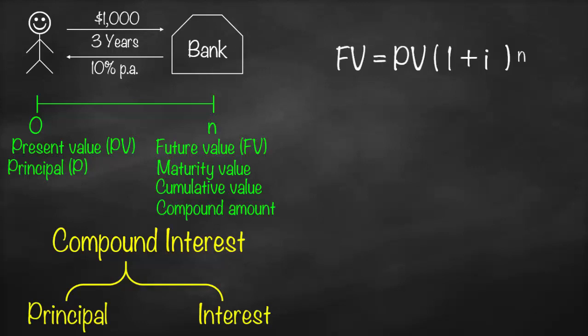Therefore, the future value formula of compound interest is equivalent to present value multiplied by 1 plus interest to the power n. So here we have interest and time must have the same time unit. Remember, always with any question related to time value of money, interest and time must have the same time unit.